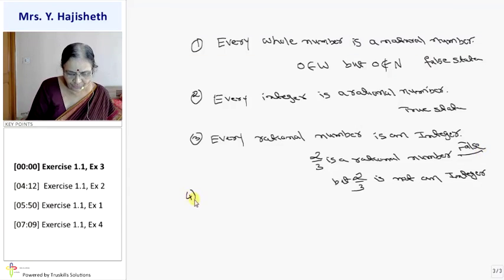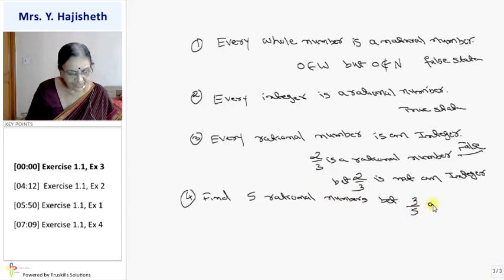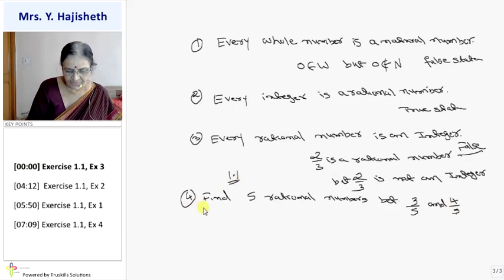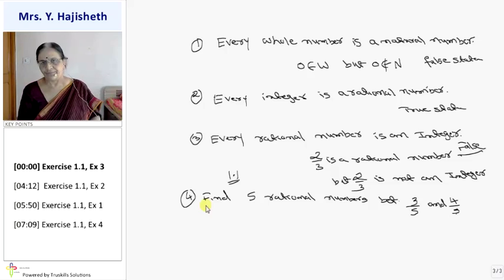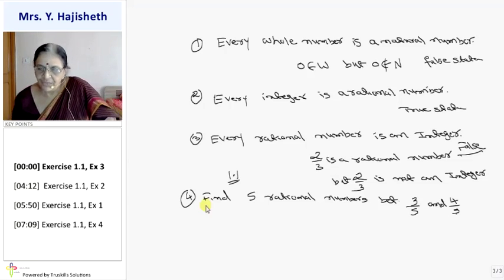Suppose I will ask you: find 5 rational numbers between 3 by 5 and 4 by 5. This is a question they have asked in your exercise 1.1, the third question. There are two methods.